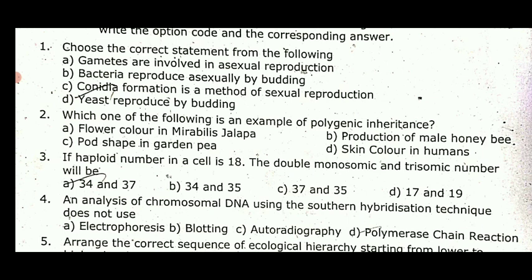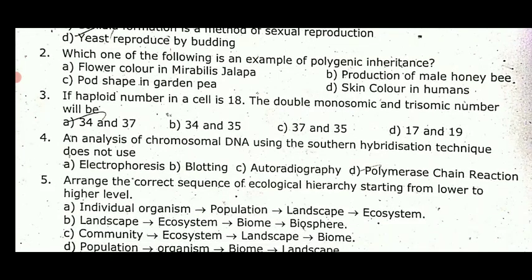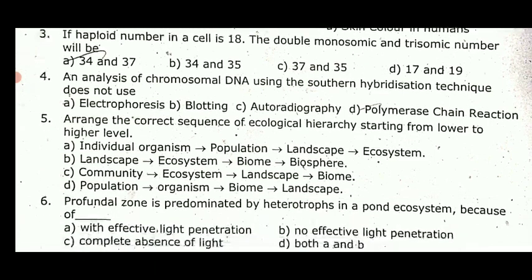If the diploid number of cells is given, the double monosomic trisomic number will be option A: 34 and 37. Next, to analyze chromosomal DNA using southern hybridization, the technique that does not apply is option D — Polymerase Chain Reaction.